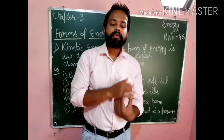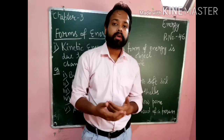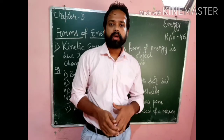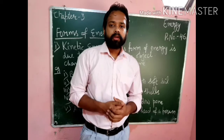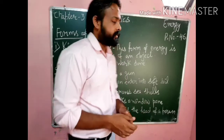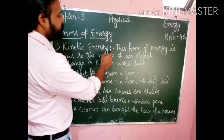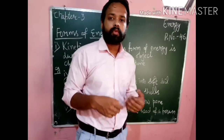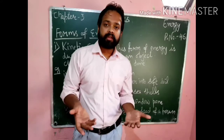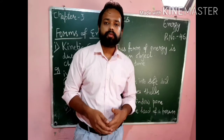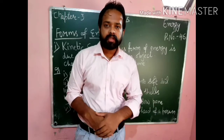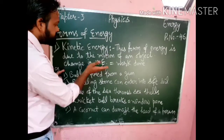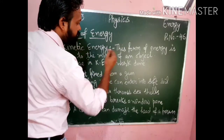So this is the first form of energy — due to the motion of the object. Things which are in motion must have some sort of energy, and that energy is called kinetic energy. So this is the first type of energy. Kinetic energy is the form of energy due to the motion of an object. Also, one important thing written in your book: change in kinetic energy is equal to work done.